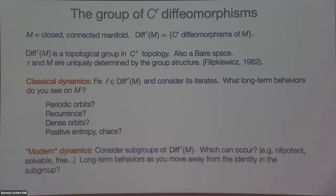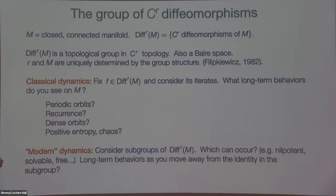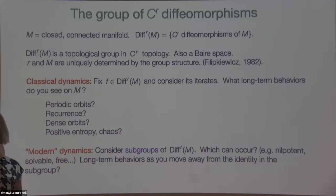Modern dynamics would consider subgroups of the group of diffeomorphisms: which subgroups can occur, and if you have enough complexity in a group, does it prohibit it from being a subgroup of the group of diffeomorphisms? So are there types of rigidity? You can ask about the dynamics of these subgroups. Iteration of a single diffeomorphism is an action of the integers, and looking in the past and future is going out to the ends of the group. But if you have other subgroups acting, you can ask similar things: if the groups are infinite, what kind of orbit structure or behaviors do you see in the limit?